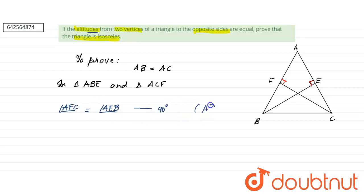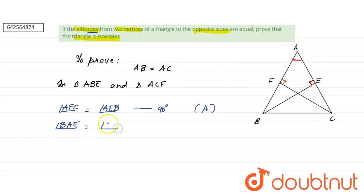Next, angle A is common to both triangles. That is, angle BAE equals angle CAF. This is the common angle, so this is our second condition.